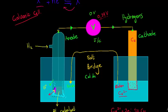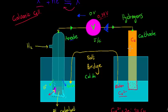The cathode is the electrode into which electrons are flowing in the external circuit. Remember, current is in the opposite direction to electron flow. The anode is where current flows into the electrolyte, and the cathode is where current flows out from the electrolyte into the electrode.